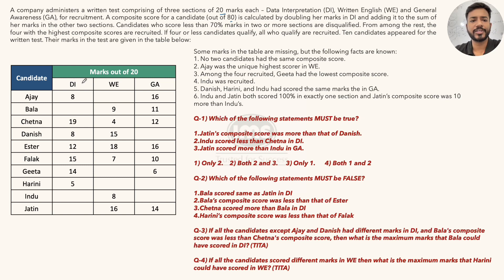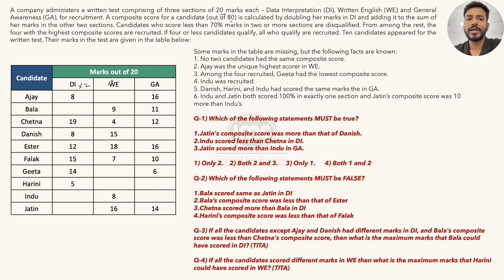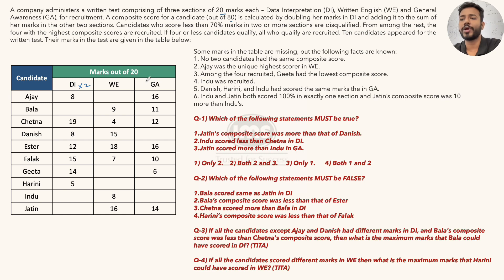The composite score is calculated by doubling the marks in DI and adding it to the sum of marks in the other two sections. So whatever DI marks you get, you double it, and WE and GA marks are added straight. That's why the maximum total becomes 80: 20×2 = 40, plus 20 and 20 = 80. So 80 is the maximum composite score a person can get.